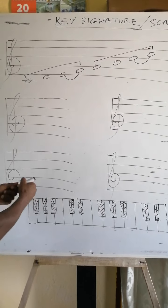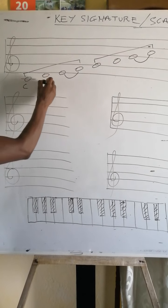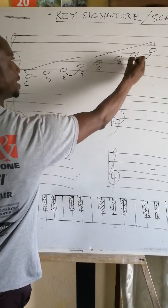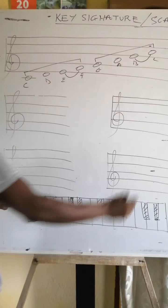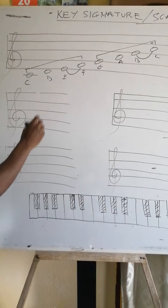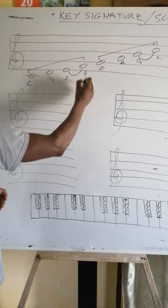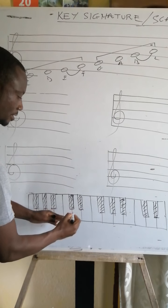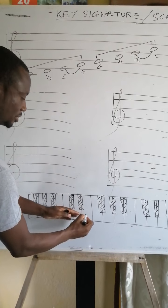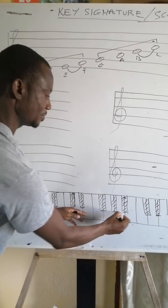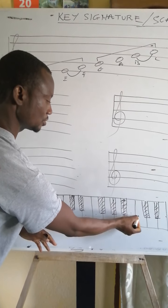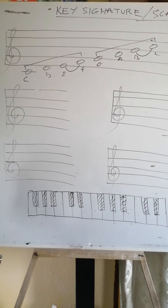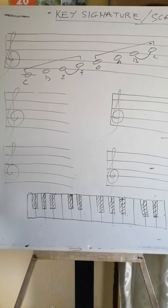Now if we use the letters: C, D, E, F, G, A, B, and C — it means that naturally between E and F, and B and C, on the keyboard, you can see that there is no black key between these two white keys, but they are considered semitones, and that's why they are natural semitones.